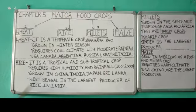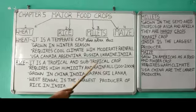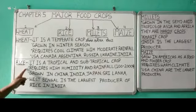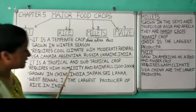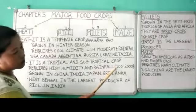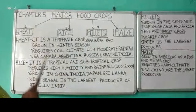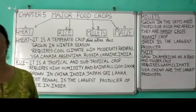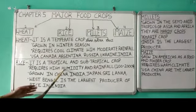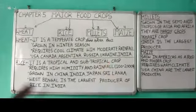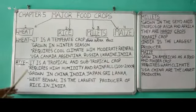The second important staple food crop is rice. It is a tropical and subtropical crop, meaning it is grown in tropical and subtropical countries. It requires high humidity and rainfall ranging between 100 to 200 centimeters. Humidity refers to the amount of water vapor present in the air, so both humidity and rainfall are high for rice cultivation.